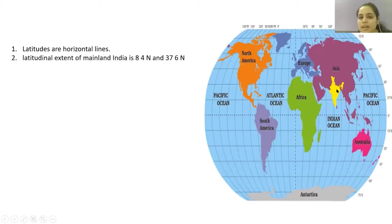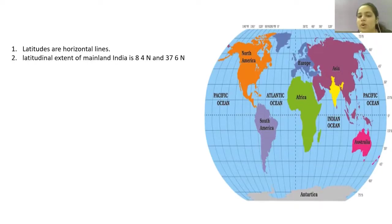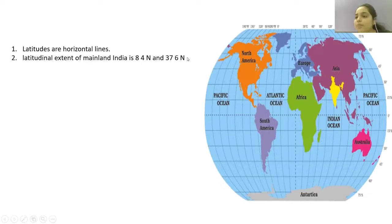With the help of latitudes and longitudes, I can identify that the latitudinal extent of mainland India is 8 degrees 4 minutes North and 37 degrees 6 minutes North. Why is it 8 degrees 4 minutes North and 37 degrees 6 minutes North?